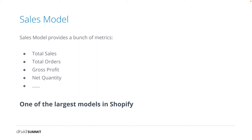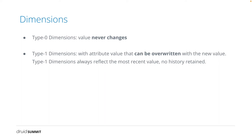If you are familiar with e-commerce, you should be very familiar with the concept of sales. Sales are the events or activities of selling products or services to clients. Usually money is involved in the sales event. The sales model provides a bunch of metrics for merchants to check their essential business KPIs, including total sales, total orders, gross profit, net quality, and other key metrics, per a set of dimensions — for example, channels or countries. It is one of the largest models in Shopify. There are various types of dimensions. This talk will only involve type 0 and type 1 dimensions. Type 0 dimensions' value never changes. Type 1 dimensions' value is changeable, and a type 1 dimension always returns the most recent value, so no history is retained.